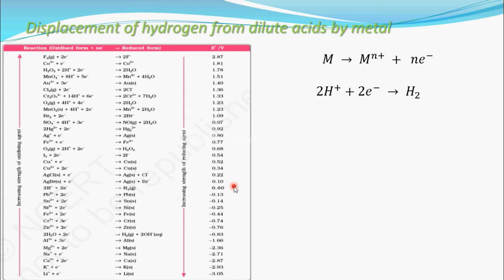Metals placed below hydrogen have low reduction potential, so they undergo oxidation and can displace hydrogen from acid solution. Metals above hydrogen have high reduction potential — they want to get reduced and only want electrons. So H+ ions will not be displaced into hydrogen molecules. Metals below hydrogen undergo oxidation, liberate electrons, and those electrons are taken by H+ ions, producing displaced H2.